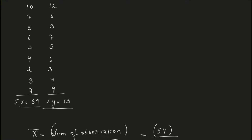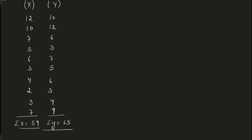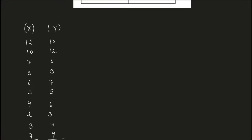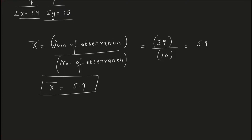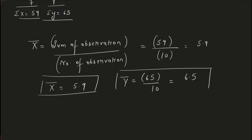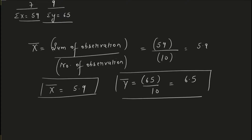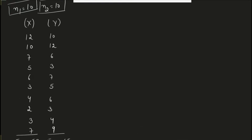The number of observations — let me call it n1 for the X data — is 10. Similarly, n2, the number of terms in Y data, is also 10. So x̄ = 59 divided by 10, which is 5.9. Similarly, ȳ = 65 divided by 10, which equals 6.5. So we have x̄ = 5.9 and ȳ = 6.5.